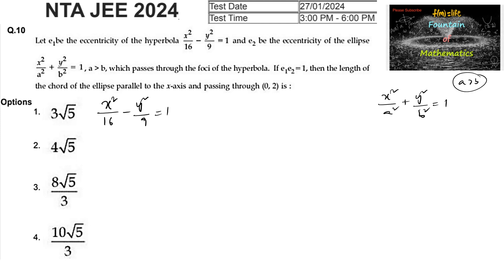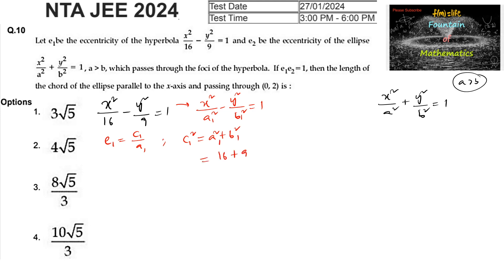Consider the hyperbola of the form x²/a1² - y²/b1² = 1, so that eccentricity e1 = c1/a1, and the relation c1² = a1² + b1². Here a1² = 16 and b1² = 9, so c1² = 16 + 9 = 25, giving c1 = 5.